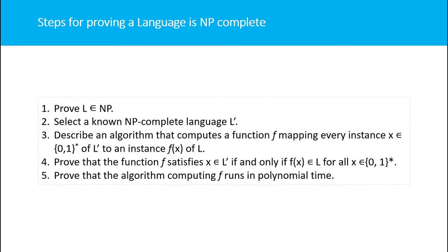Here are the steps to prove a language is NP-complete. First, prove the language belongs to NP. Then, select a known NP-complete language L' and reduce that known NP-complete language to the given language. In steps 3 and 4, we prove that the reduction algorithm computes in polynomial time.